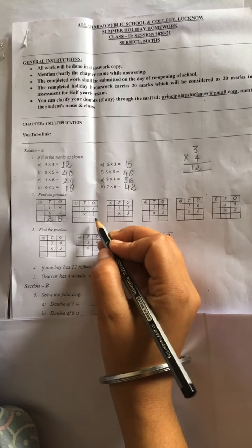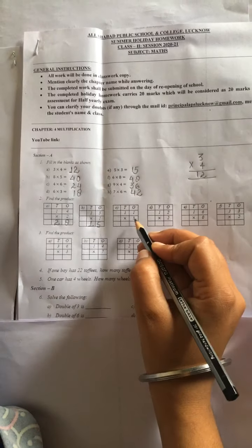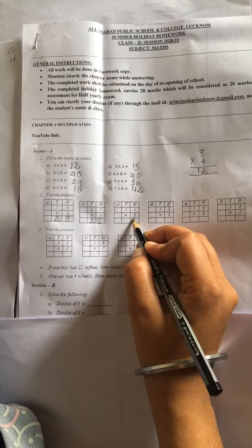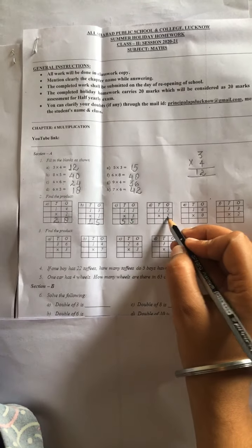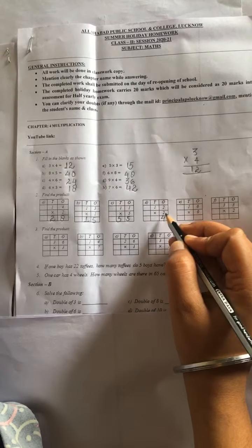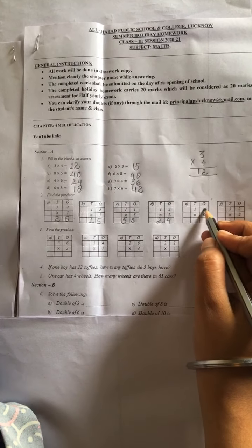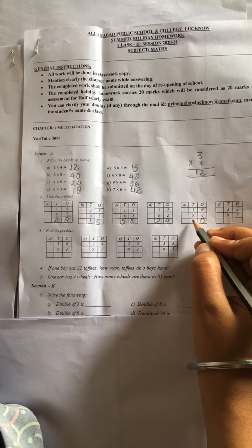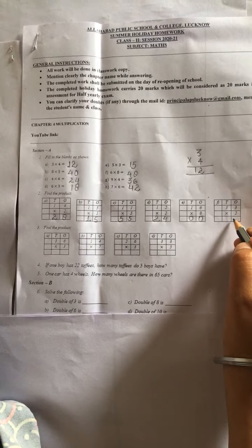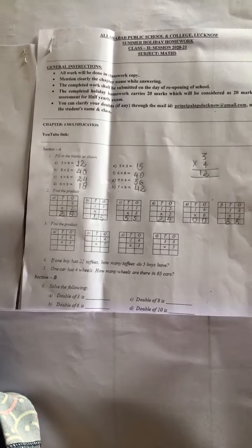1 times 5 is 5. 2 times 2 is 4. 0 ka kisi bhi digit mein multiply karenge, you get 0. 2 times 3 is 6. 2 times 3 is 6.